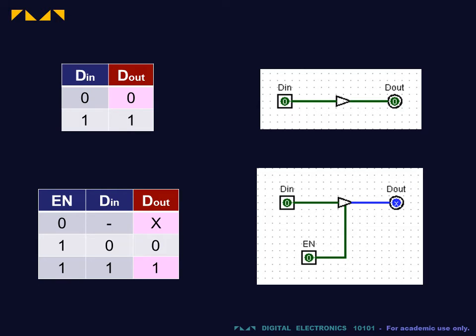This truth table may be written in shorter ways. Since the disabled state is unaffected by the value of Din, we may collapse the top two rows and leave the value of Din undefined.